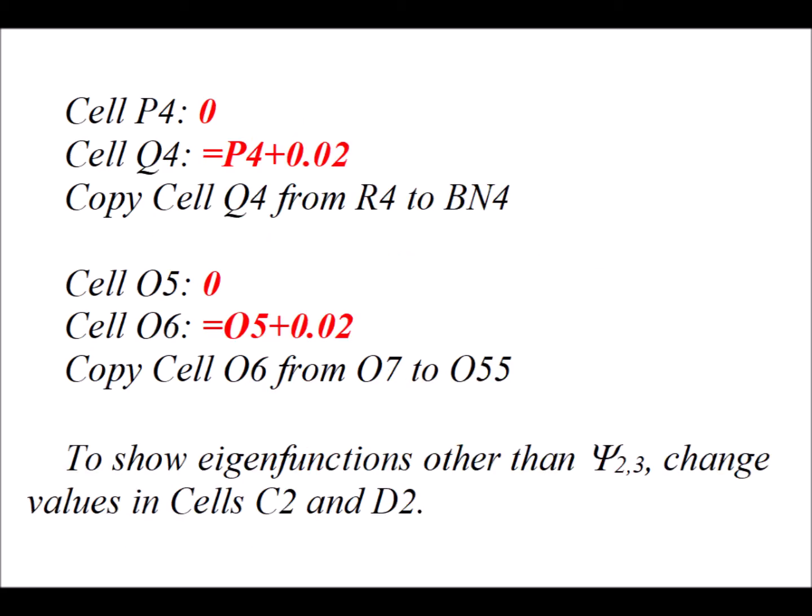Next, in cell P4, we type the number 0. In cell Q4, we type the formula equals P4 plus 0.02. So we're basically dividing up the box length into 50 subdivisions. Then we copy that formula from Q4 to R4 to BN4. Then we type in cell O5 the number 0 again. In cell O6, we have a formula equals O5 plus 0.02. This is going in the other dimension, breaking that box length up into 50 subdivisions. Then we copy cell O6 from O7 to O55.